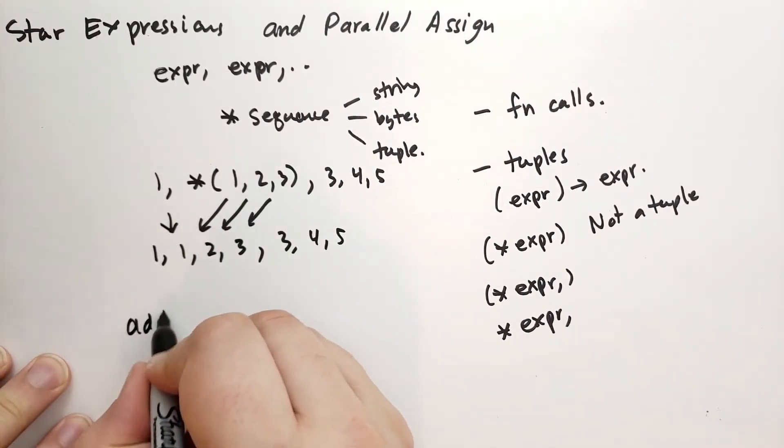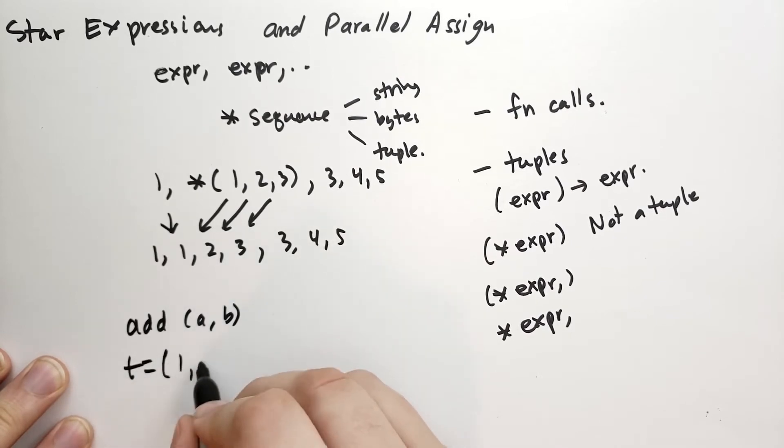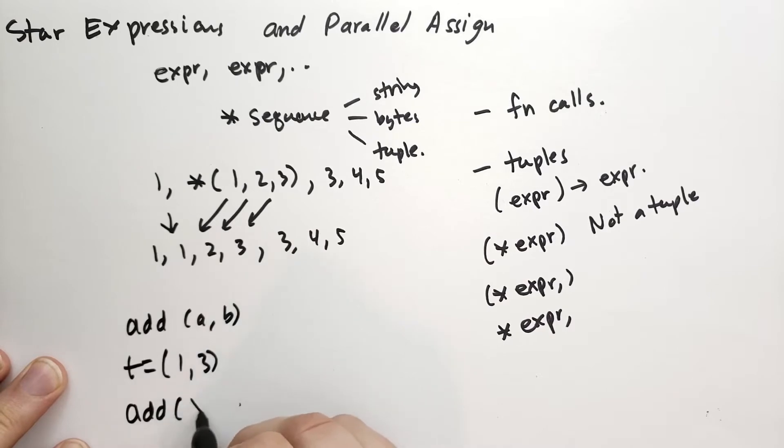Let's say you had a function add that takes a, b, and then you had a tuple t which is 1, 3, and you want to add 1, 3 together. So you can say add(*t), and that should give you 4 back. That's the power of this.